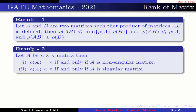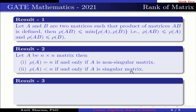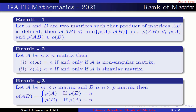Result number 2: rank of AB equals rank of A if A is a non-singular matrix. Result number 3: let A be an M×N matrix and B be an N×P matrix. Then rank of AB equals rank of A if rank of B equals N, and rank of AB equals rank of B if rank of A equals N.